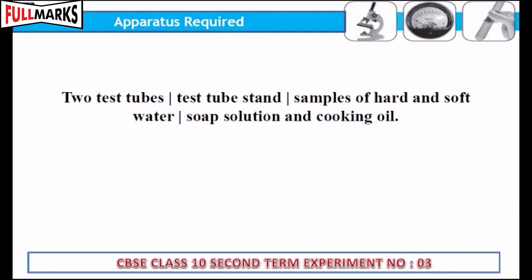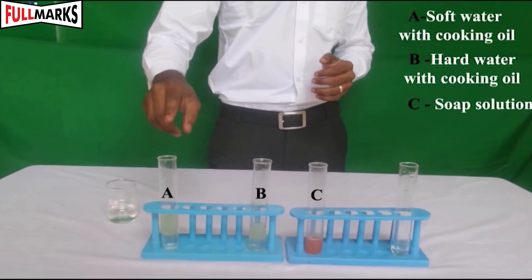Samples of hard water and soft water, soap solution, and cooking oil. Procedure: Take 10 ml of distilled water and cooking oil in a test tube, label it as A. Take 10 ml of hard water and cooking oil in another test tube.